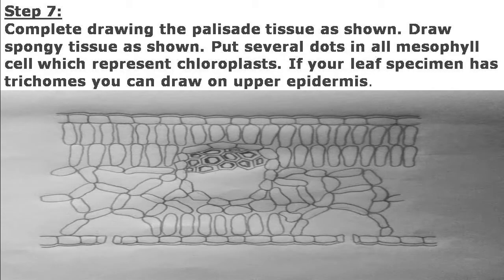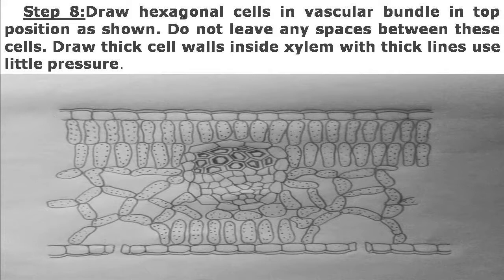Step seven: put many small dots on the palisade tissue to indicate chloroplasts, which help in photosynthesis. In the vascular bundle in the mid rib, draw hexagonal dark cells to indicate xylem. Step eight: make the xylem without intercellular spaces. In the same vascular bundle, draw hexagonal light cells to represent phloem. These are the conducting tissues — xylem and phloem — located in the mid rib.